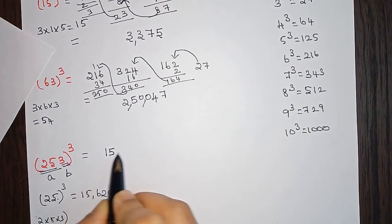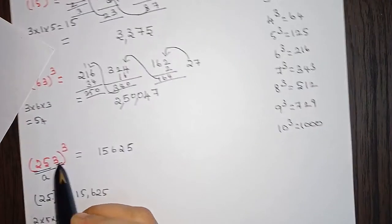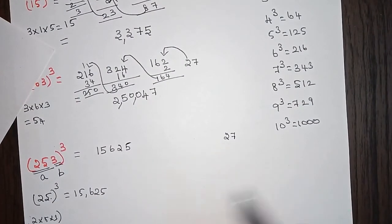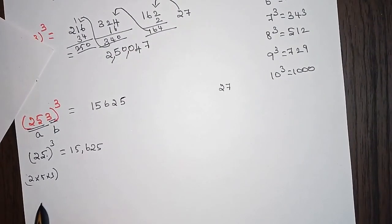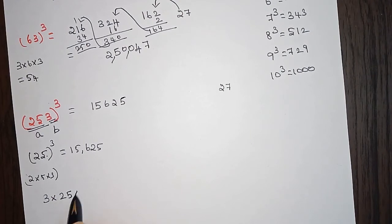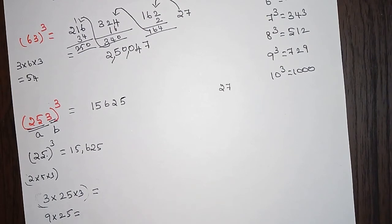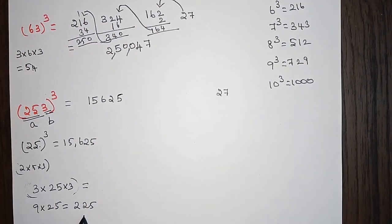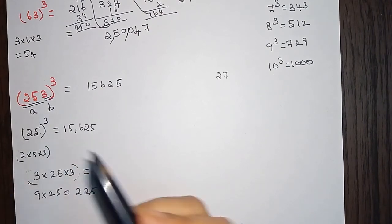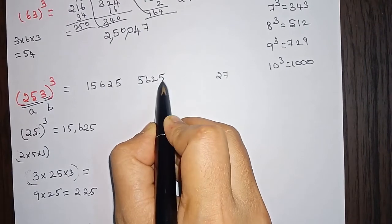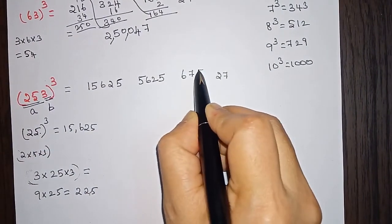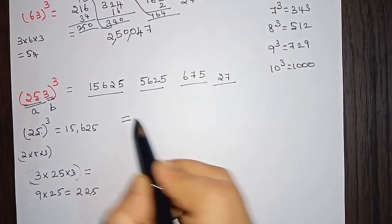So the cube of 25 is 15,625. Then we find the cube of 3, which is 27. Now we find the common term 3 into 25 into 3, which is 9 into 25, giving us 225. After finding this common term 225, we multiply 225 by 25 to get 5,625, and then multiply 225 by 3 to get 675.